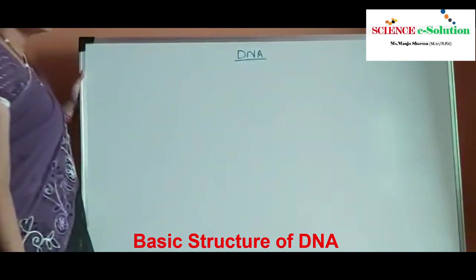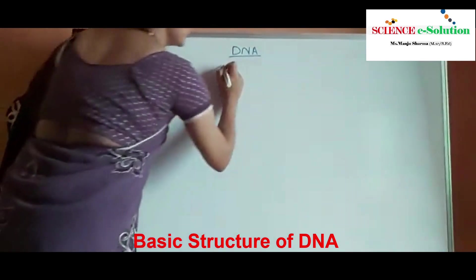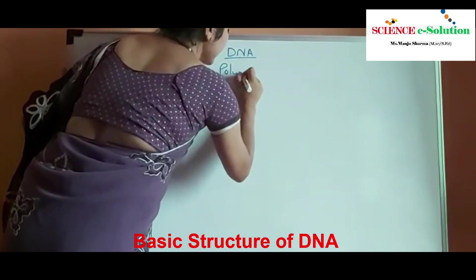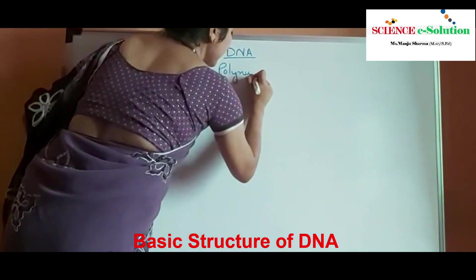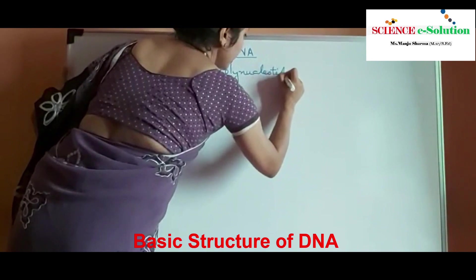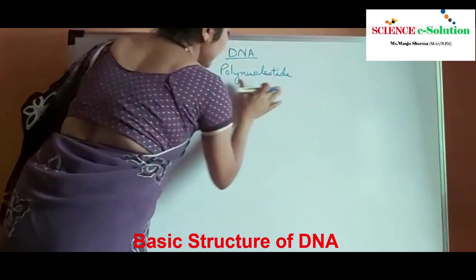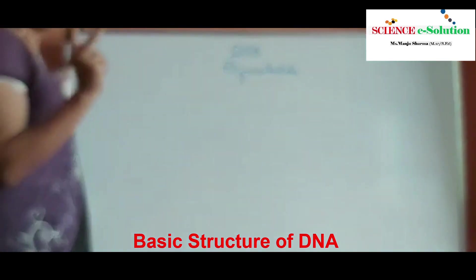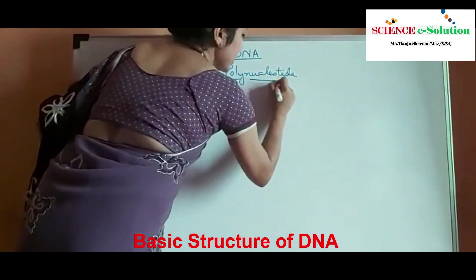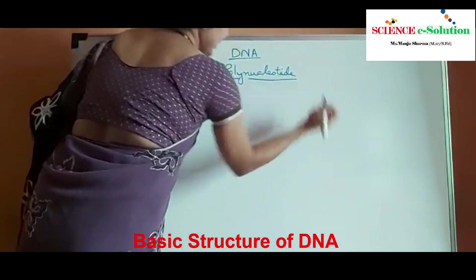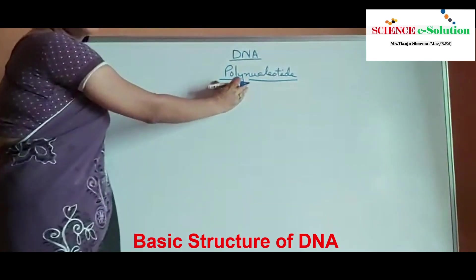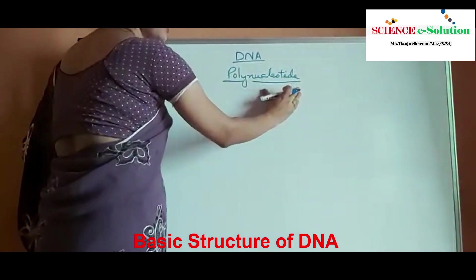DNA is a long polynucleotide chain. The term polynucleotide itself is made up of two words: poly and nucleotide. The word poly means polymer of nucleotides.